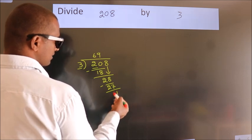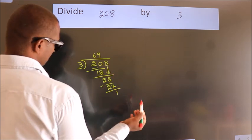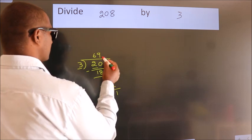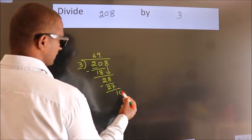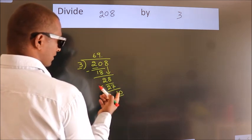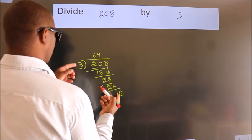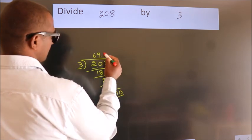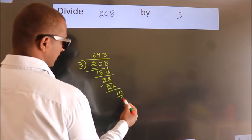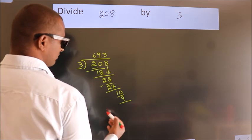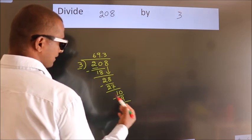After this, no more numbers to bring down. So what we do is put a dot and take 0, so 10. A number close to 10 in the 3 table is 3×3=9. Now we subtract. We get 1.